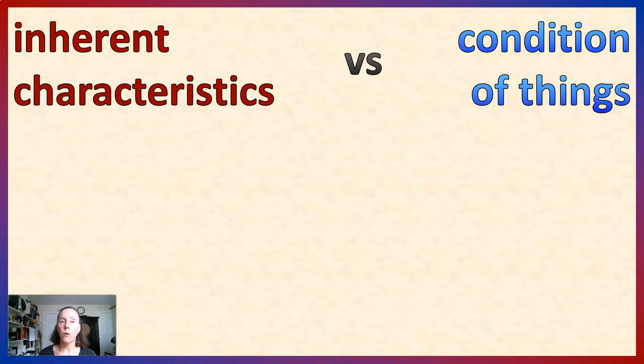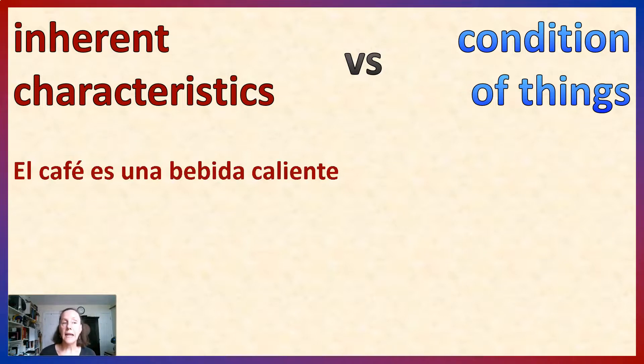Let's take a moment to go over once more the difference between inherent characteristics and conditions of things just to make sure that this is clear. El café es una bebida caliente. In the times before iced coffee, coffee only came in one temperature and that was hot. Now, if I were to go and get coffee and put it on my desk and let it sit there, then my coffee would become cold. Mi café está frío. That is not an inherent characteristic of the coffee. Instead, this is the condition of my particular coffee after I let it sit there for a while.